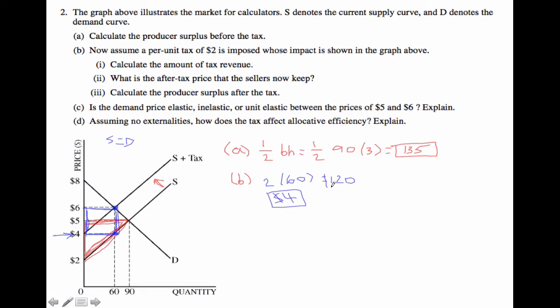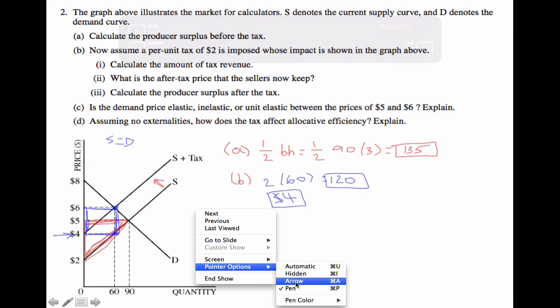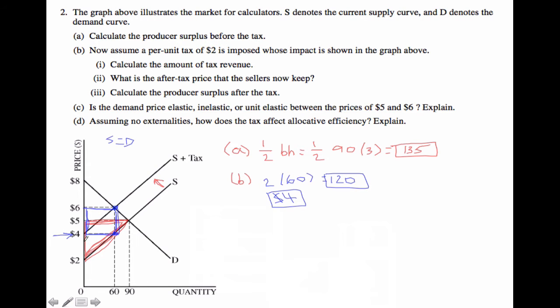So now what we're asked to do is to go ahead and calculate the new producer surplus after the tax. So let's think about this by looking at the new producer surplus. In this case, our new producer surplus is going to be this region. And therefore, we have a producer surplus of a half times a base of 60 times 4 minus 2, which is 2, which is the same as 60. So that is our new producer surplus.